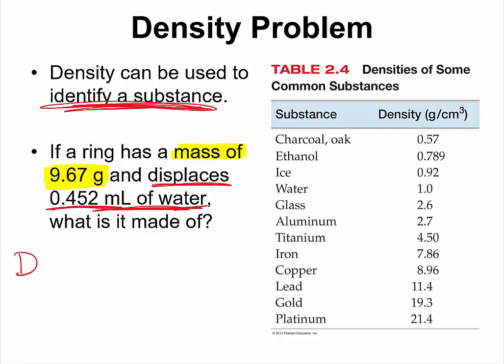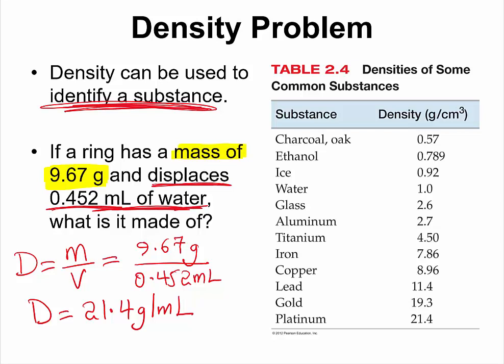Well, we know that density should be equal to the mass of a material divided by its volume. We know the mass is 9.67 grams. We know the volume is 0.452 milliliters. If you divide the mass by the volume, you should get a density of approximately 21.4 grams per milliliter, which indicates that the ring is platinum.